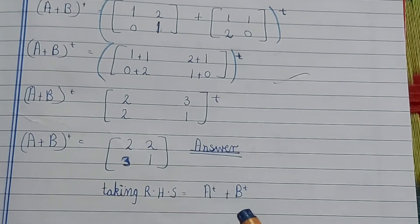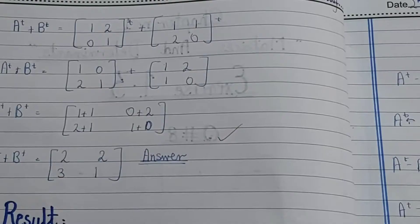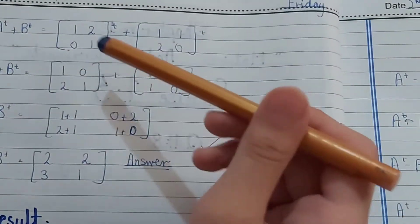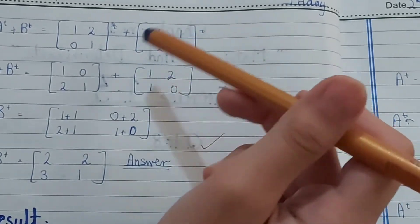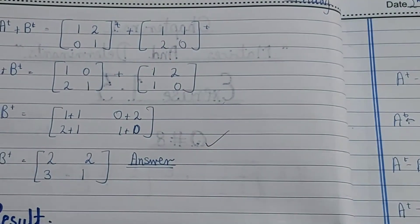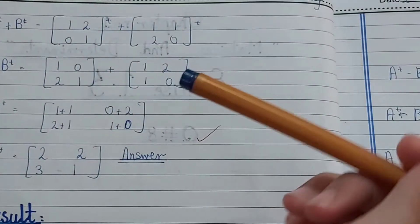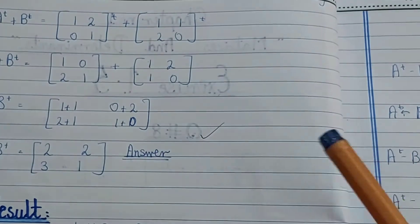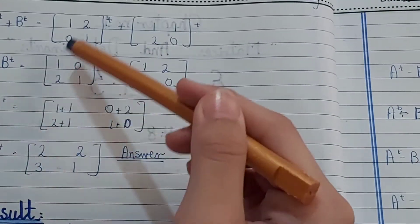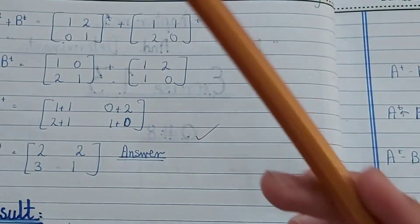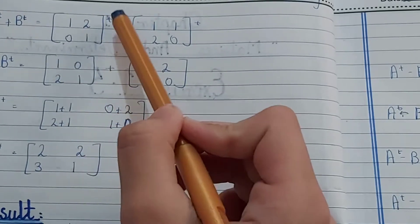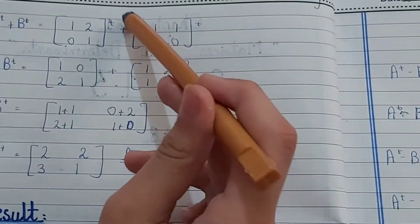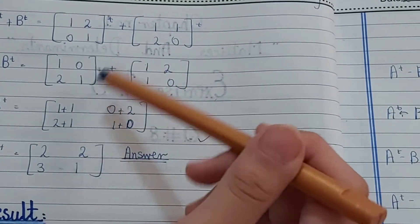Now taking the right-hand side, which is A transpose plus B transpose. Here, matrix A is [1,2;0,1] with small t, plus matrix B [1,1;2,0] with small t. Note: this is a different method from left-hand side — here we take each matrix's transpose separately before adding.